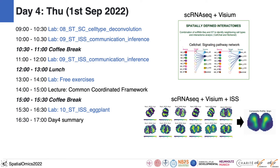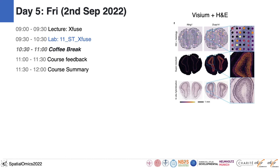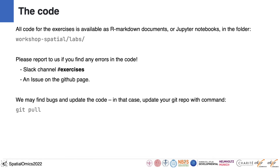We'll cover cell type deconvolution using spatial transcriptomics, in situ, and single-cell data, as well as spatial mapping of images to a reference — a common coordinated framework. One of the last topics will be super-resolution projection of gene expression into tissues: if you have Visium datasets with spots and an H&E image, you can project gene expression to find at high resolution where a gene is expressed in H&E images.